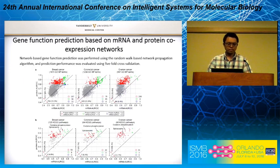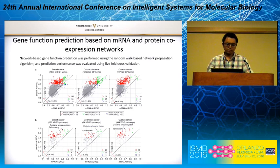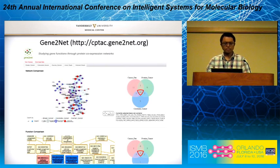We also performed gene function prediction based on the mRNA and protein co-expression networks. We found that proteomics data can strengthen the link between gene expression and function for over 75% of gene ontology biological process terms and over 90% of KEGG pathways. We also developed the web application tool Gene2Net, which can reveal novel gene function relationships based on highly functional protein co-expression networks.